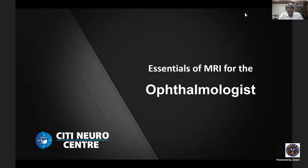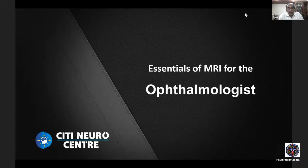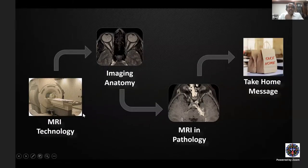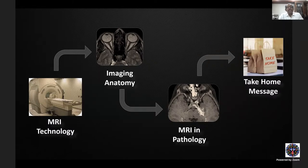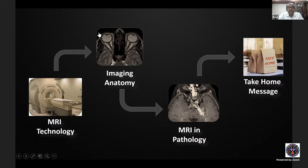Thank you for the kind introduction. Today's presentation covers the basics of MRI for ophthalmologists, including MR technology, image production, commonly used sequences, patient safety issues, and imaging artifacts. This will be followed by imaging anatomy of the orbit, how different structures appear on basic pulse sequences, and common pathologies where MRI aids diagnosis, concluding with take-home messages.